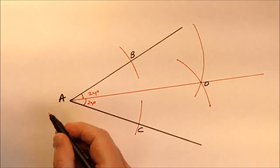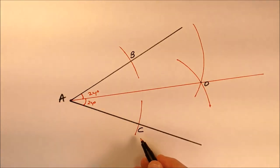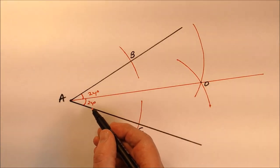And this angle has a measure of approximately 24 degrees. So angle B, A, D, and angle D, A, C have the same measure.